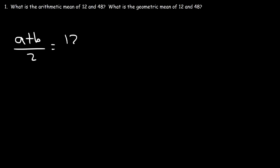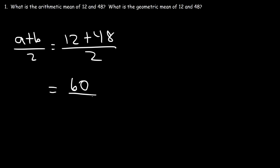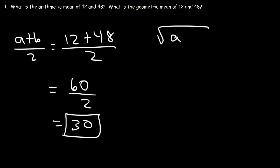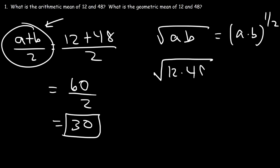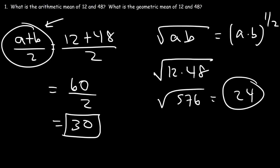Now let's answer the original question. The arithmetic mean of 12 and 48 is 12 plus 48 divided by 2: that's 60 divided by 2, which is 30. The geometric mean is the square root of a times b — here it's a plus b over 2 for the arithmetic mean and (ab)^(1/2) for the geometric mean. So the geometric mean is the square root of 12 times 48, which is the square root of 576, equal to 24.